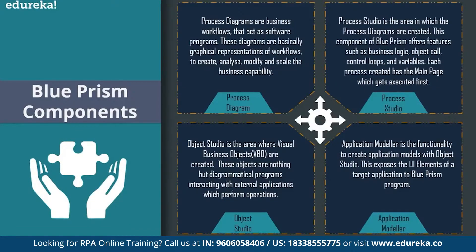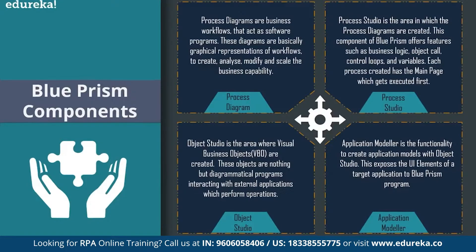Finally, the last component is the application modeler. Application Modeler is basically the functionality to create application models with the object studio. It exposes the UI elements of the target application to the Blue Prism program itself. So the four components are: the process diagram, the process studio, the object studio, and the application modeler. Process diagrams are business workflows; process studio is where they are created; object studio is where visual business objects are created; and application modeler is the functionality to create application models.